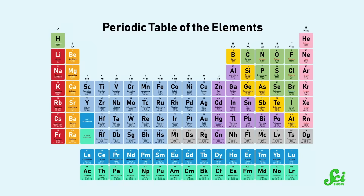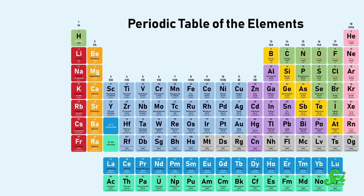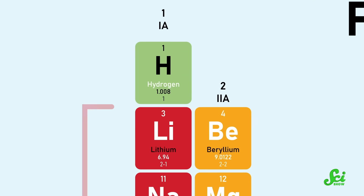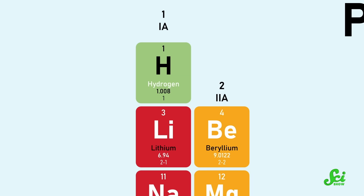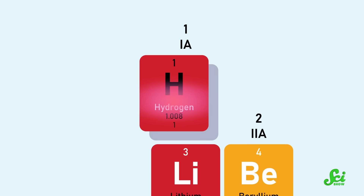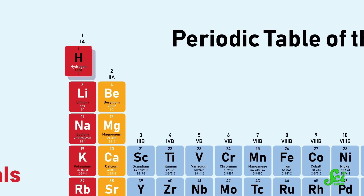Pull up any periodic table and take a close look at hydrogen. It's probably sitting up above lithium at the top of the alkali metals, but look a little closer. Maybe it's shaded a different color than the elements below it. Maybe it's floating a slight distance away with a little drop shadow — it looks like it's embarrassed to be there, like it's not really with those guys.